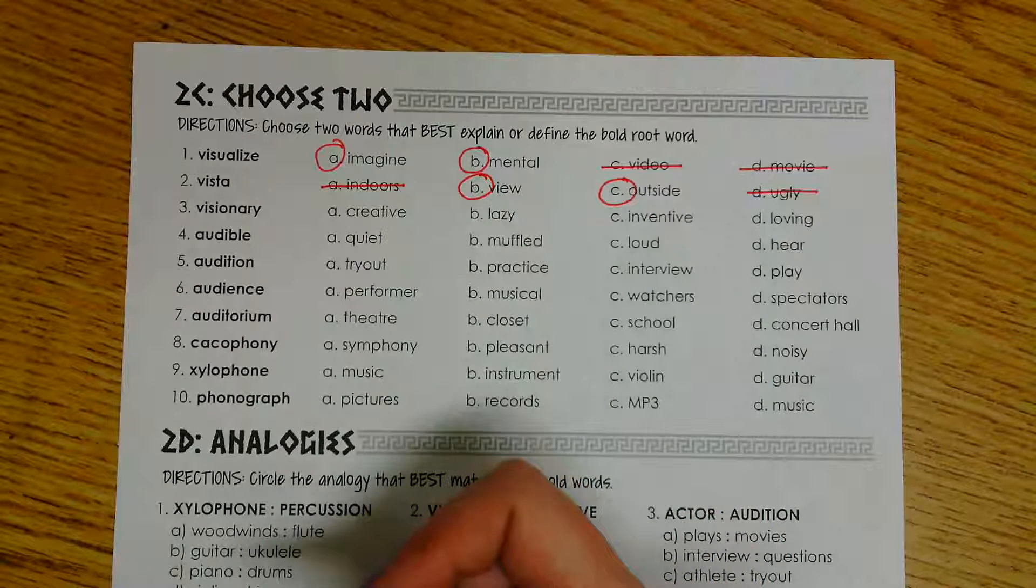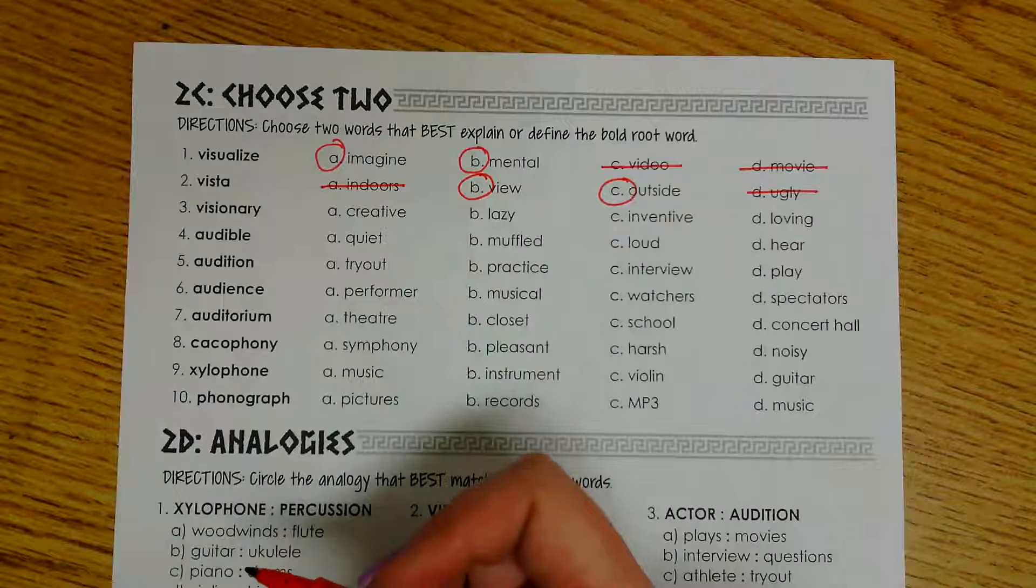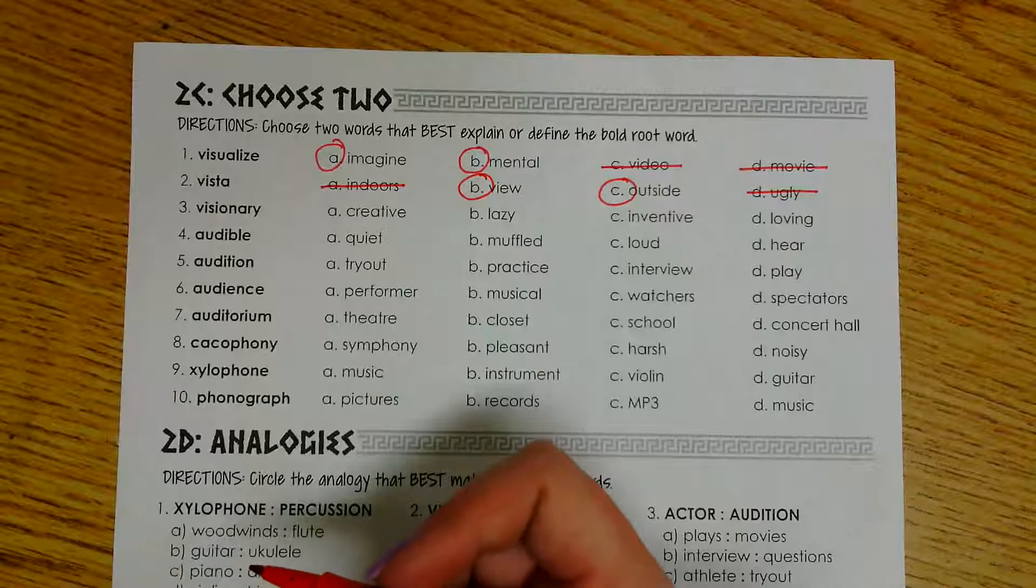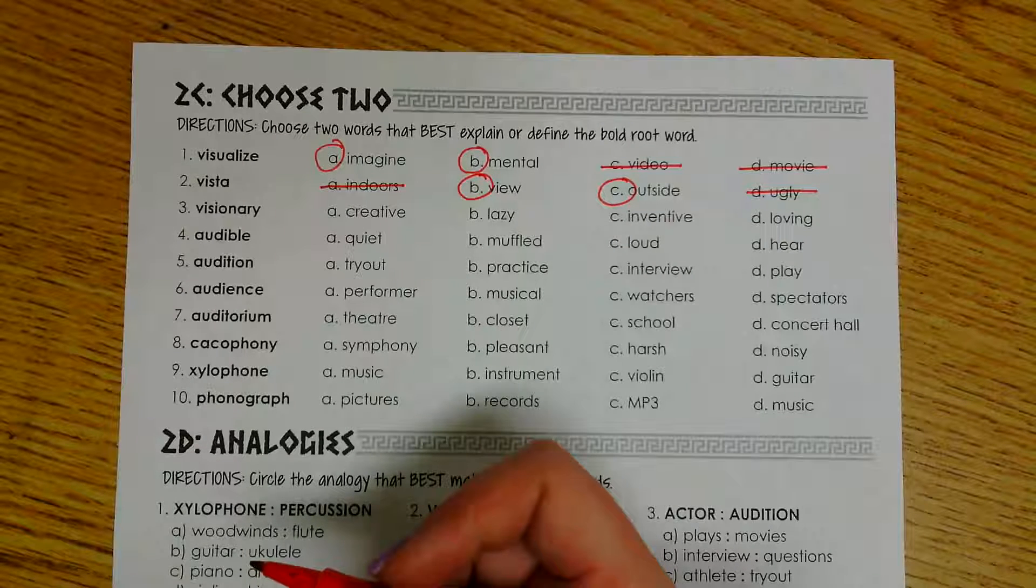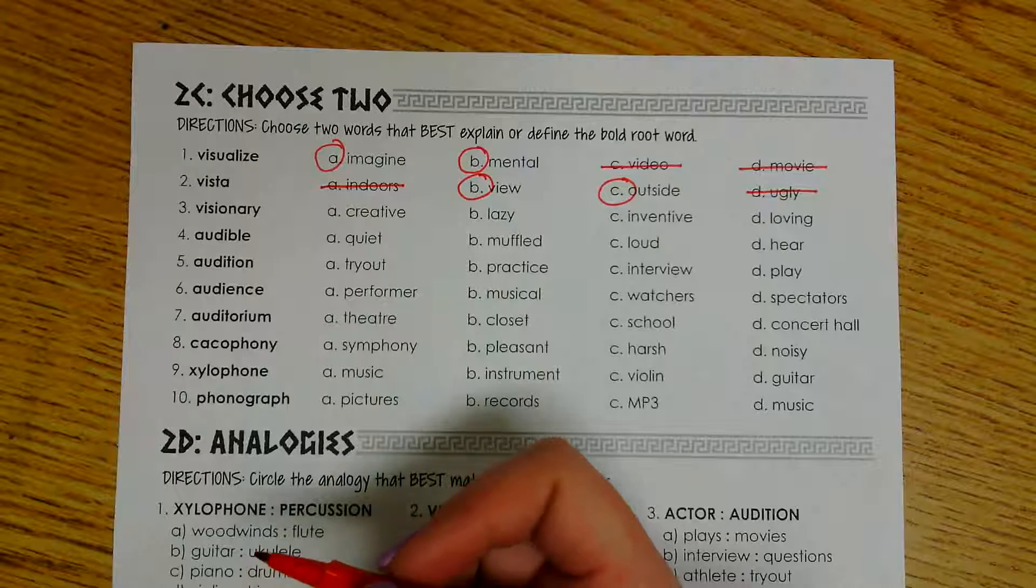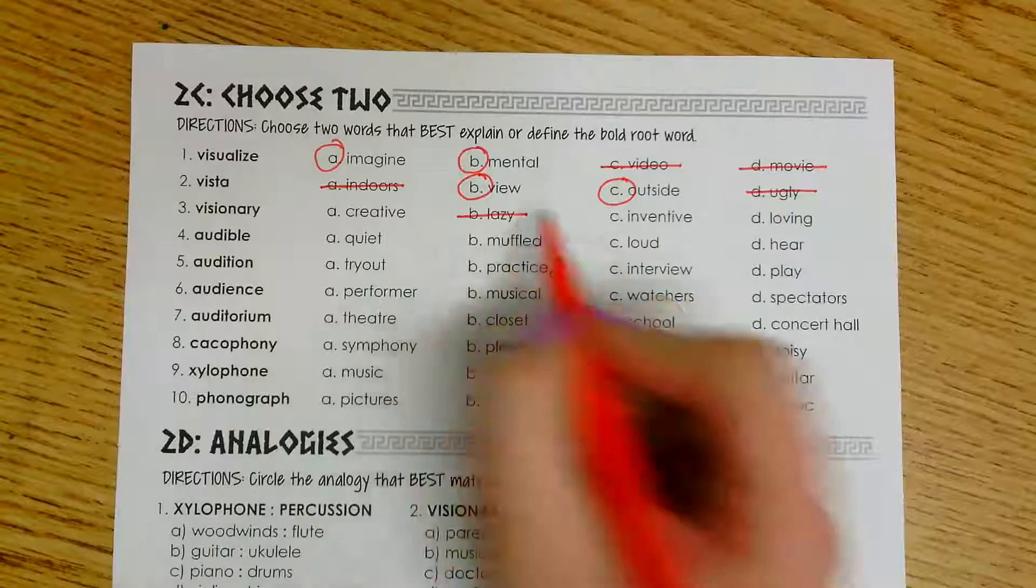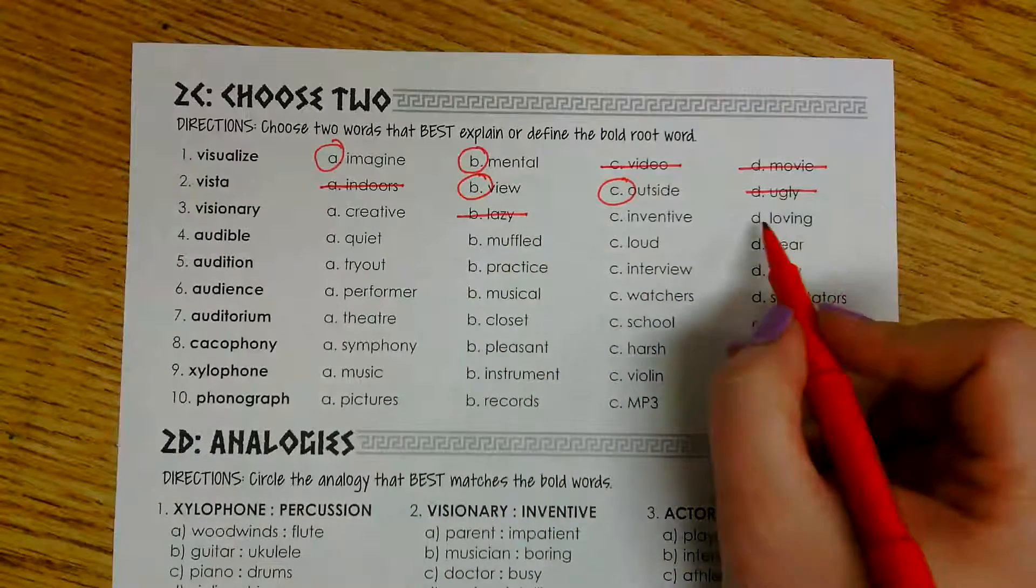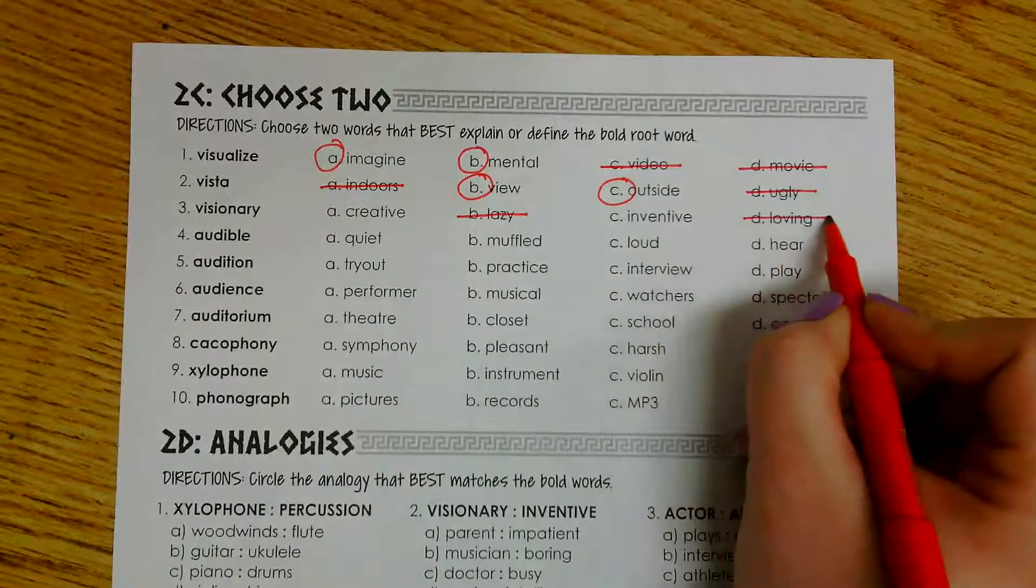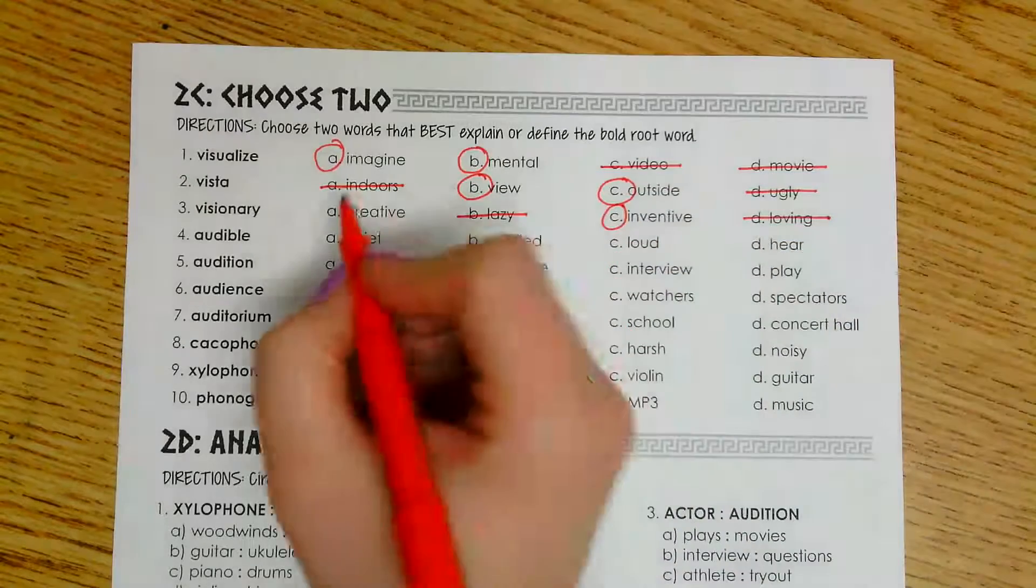Number three is the word visionary. We have creative, lazy, inventive, and loving. Now I know that a visionary comes up with a lot of ideas. They make new things. So there's a very good chance they are not going to be lazy. And our definition really doesn't say anything about loving. So I'm going to go ahead and mark that one out. So that leaves me with inventive and creative.